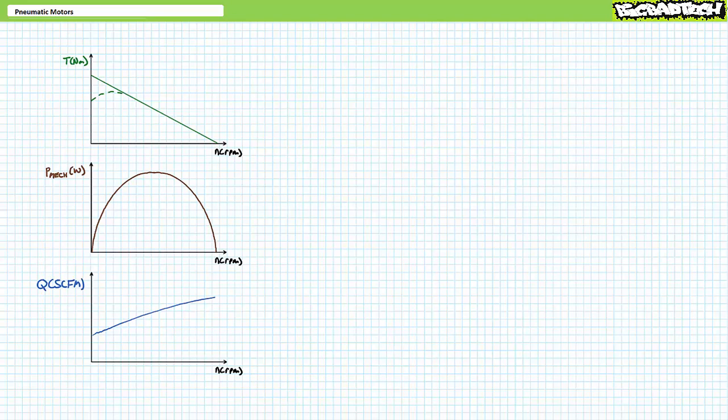Now that we've got a general orientation of the speed torque, mechanical power, and flow rate curves for a general purpose air motor, let's discuss how air motor data sheets account for different load-induced pressures.